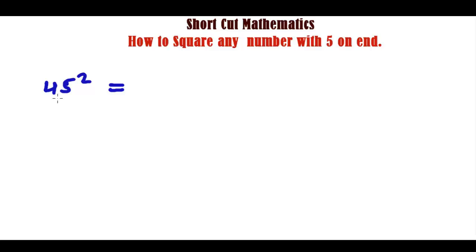It's 45. So it will be 4 plus 1, 5, 5 times 4, 20, 25. That's it. This is the answer. 35, suppose. So it's 3 plus 1, 4, 4 times 3, 12, and 25.